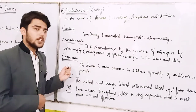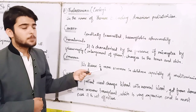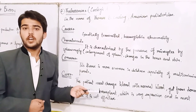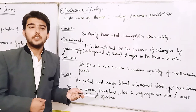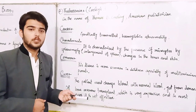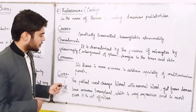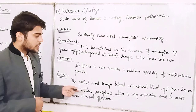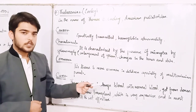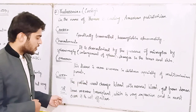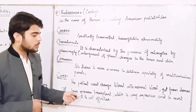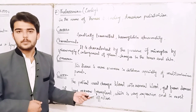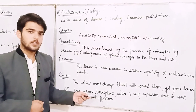This disease is common in children, especially those of Mediterranean parents — those who live near oceans or seas. Its cure is that the patient must change blood to normal blood obtained from donors, or it can be cured by bone marrow transplant, which is very expensive, but in most cases it is not effective.